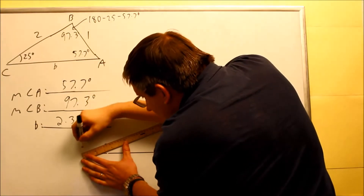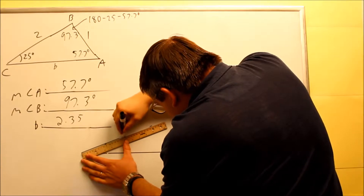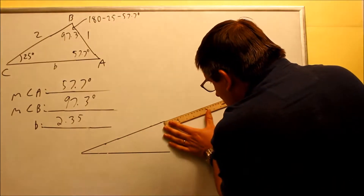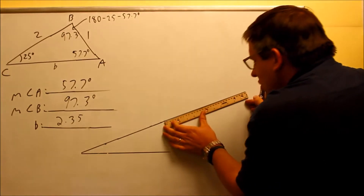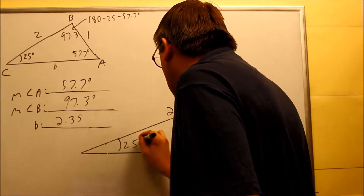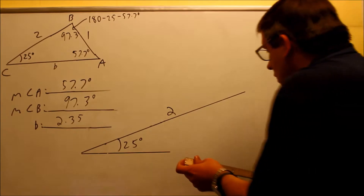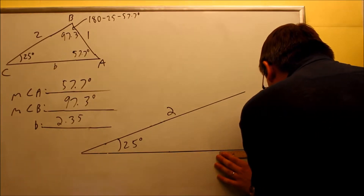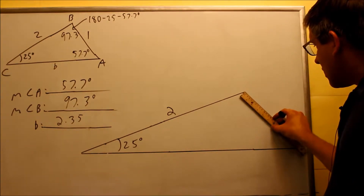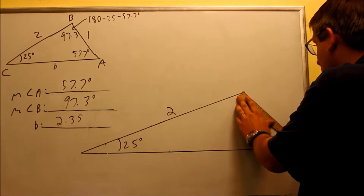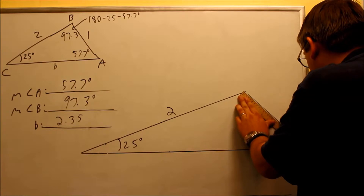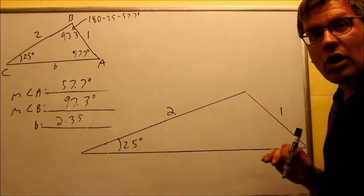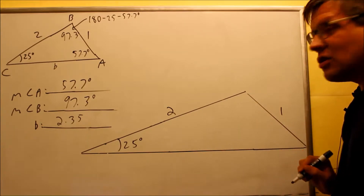One ruler length represents one unit, and we have two units, so I need to draw two ruler lengths — here's one, and then one more, making the whole length equal to two, with 25 degrees here. I then connect the line out and draw the last side — one ruler length — and you can see it connects all the way down. That confirms the triangle with angles 97.3 and 57.7 degrees is drawn out.